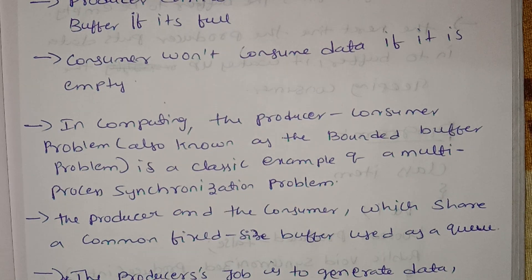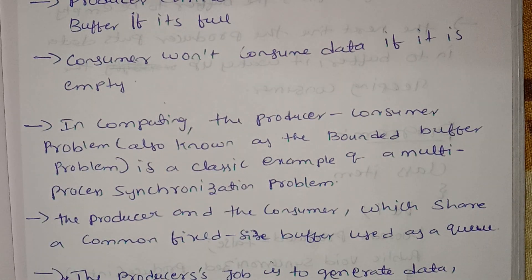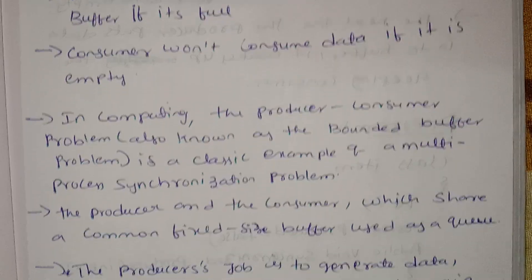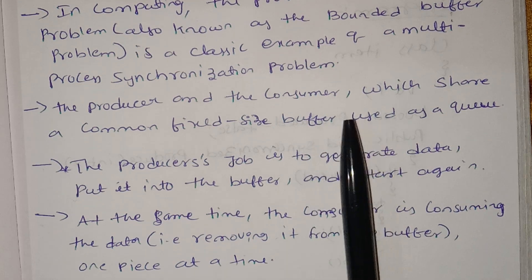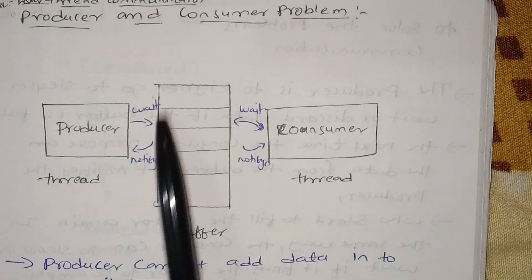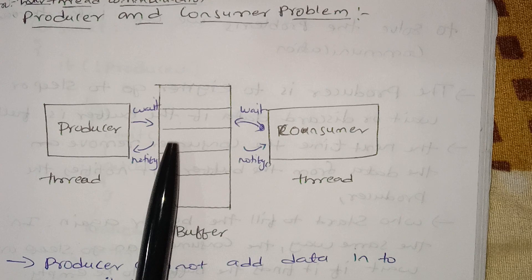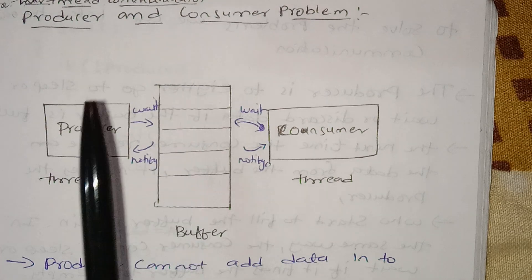The producer and consumer problem, also known as the bounded buffer problem, is a classic example of a multi-process synchronization problem. The producer and consumer share a common fixed-size buffer used as a queue.